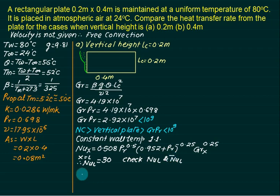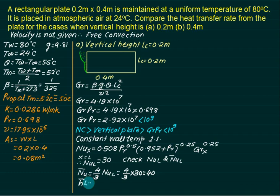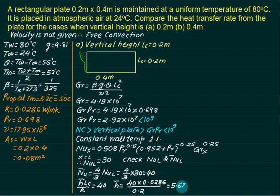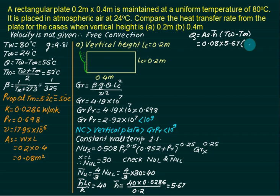For laminar flow, Nu_bar = (4/3) × Nu_L = (4/3) × 30 = 40. Average heat transfer coefficient: h_bar = Nu_bar × k / Lc = 40 × 0.0286 / 0.2 = 5.67 W/m²K. Heat transfer Q = area × h_bar × (Tw − T∞) = 0.08 × 5.67 × (80 − 24) = 25.4 W. Wait — with smaller side vertical, Q = 25.4 W (approximately 50.8 W per side if both sides considered).